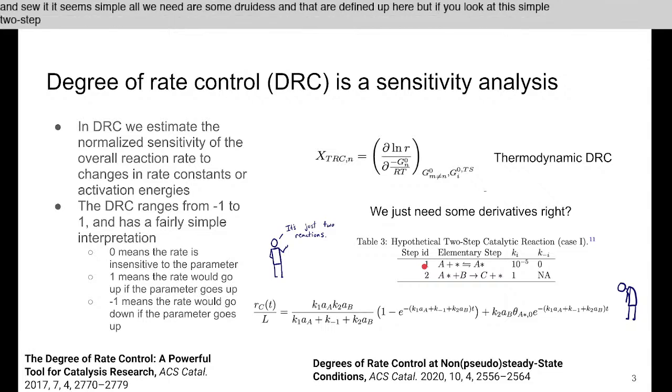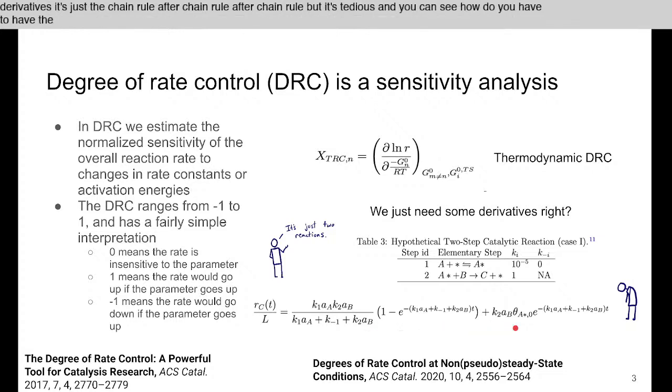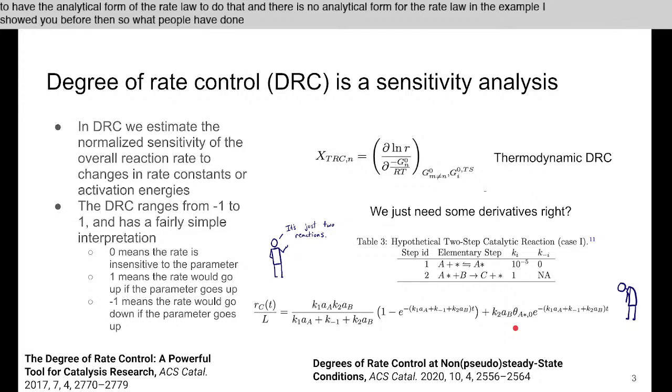You can work out the derivatives - it's just the chain rule after chain rule after chain rule - but it's tedious. There is no analytical form for the rate law in the example I showed you before, so what people have done is resort to finite differences to approximate the derivatives, and that's also tedious and difficult.